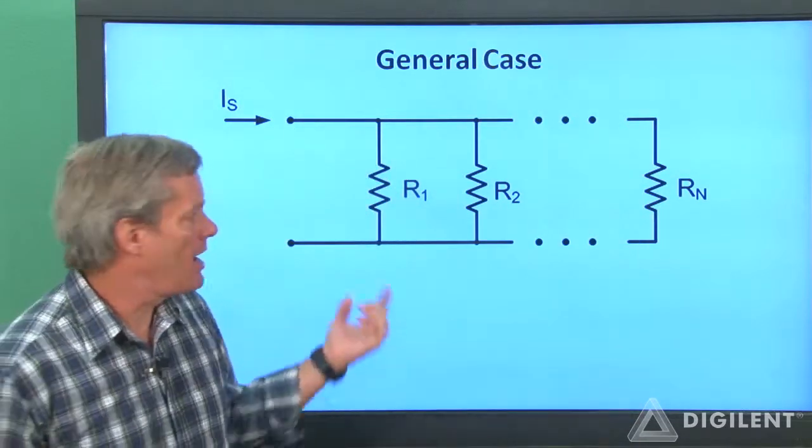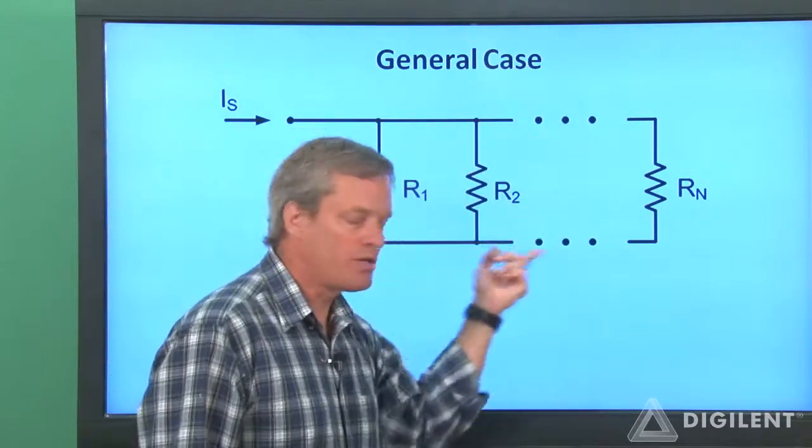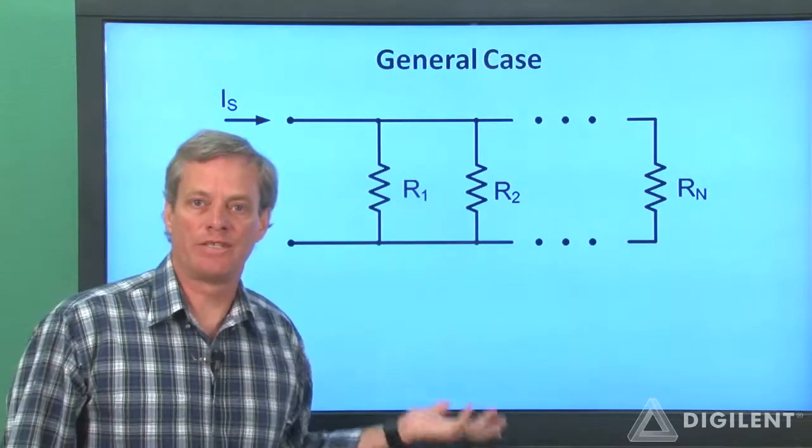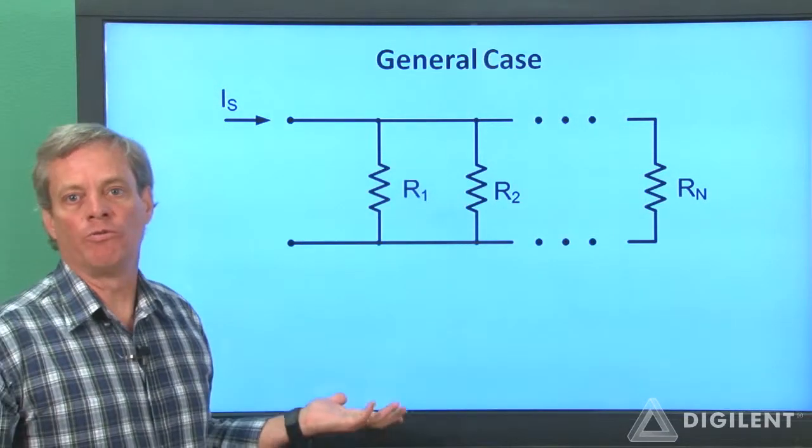If we do KVL around any loop in this circuit, we see that the voltage difference across all the resistors is the same, so they're all in parallel with one another.